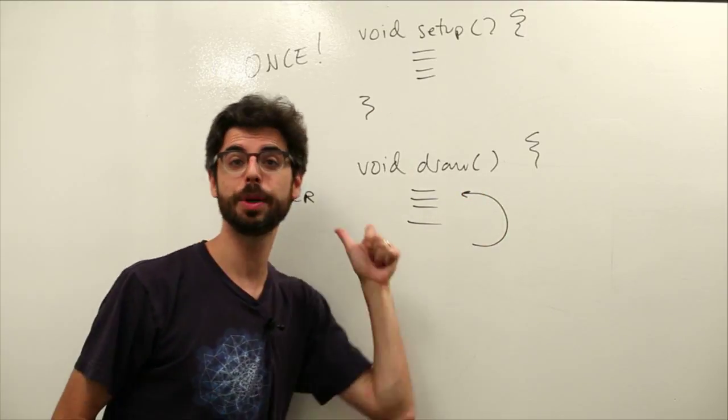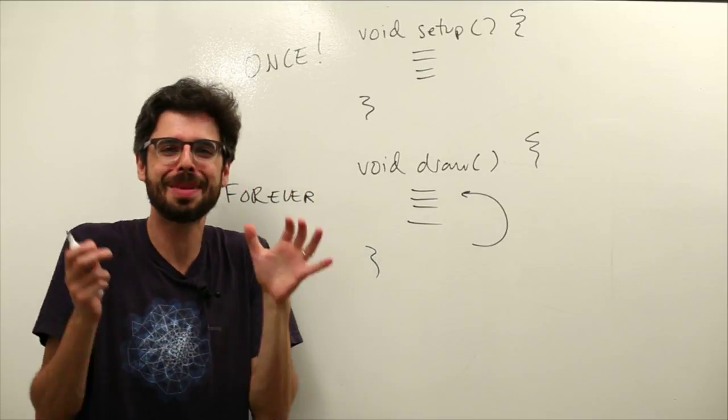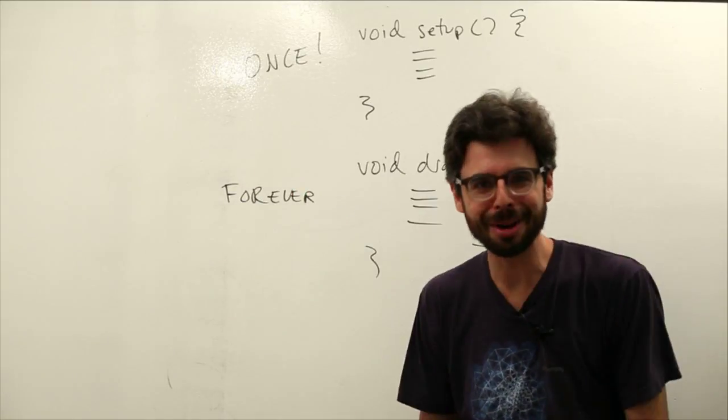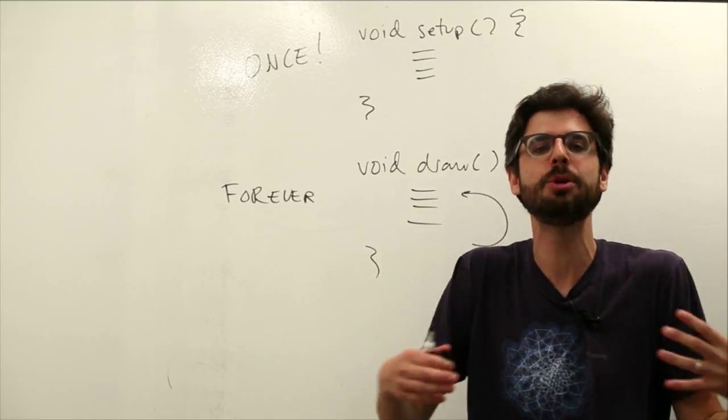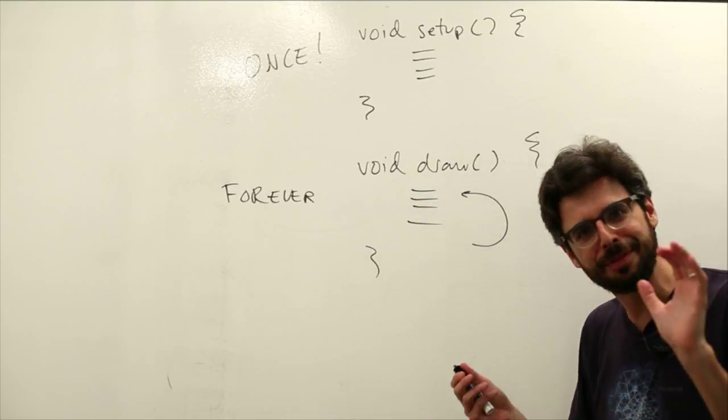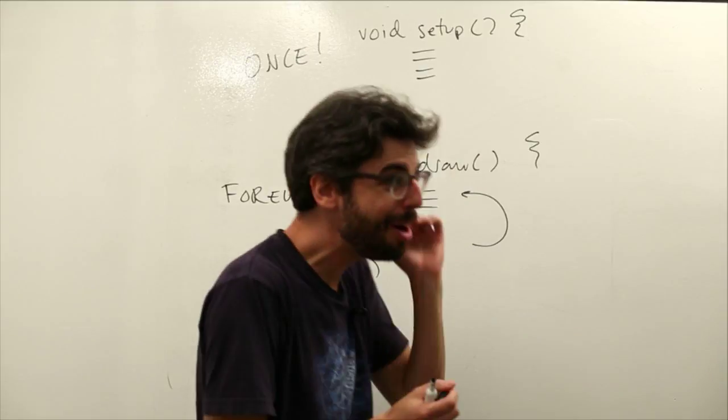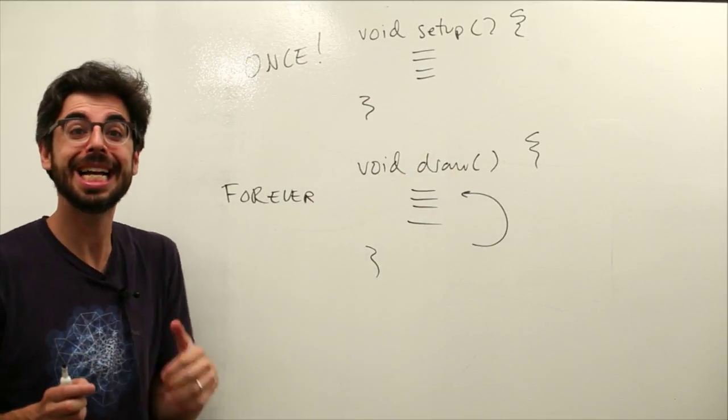Stuff happens here once, looping over and over again. This is a very basic, simple model for controlling the flow of a program - how it executes the instructions, in what order. In this video, what I want to do is introduce one more layer on top of this, the idea of an event.